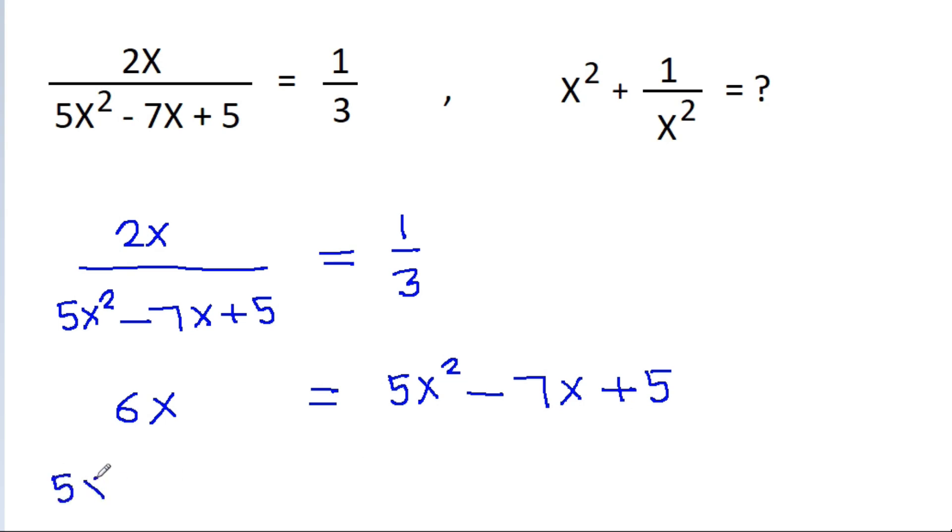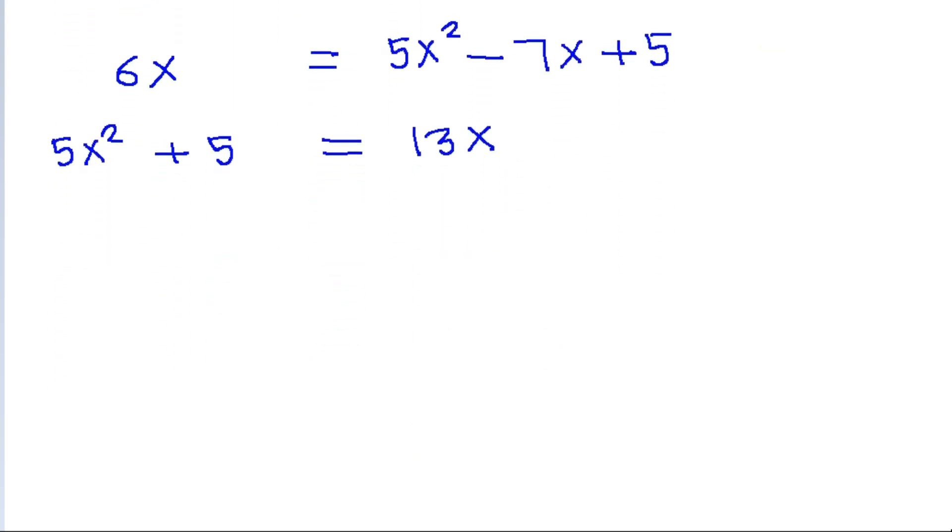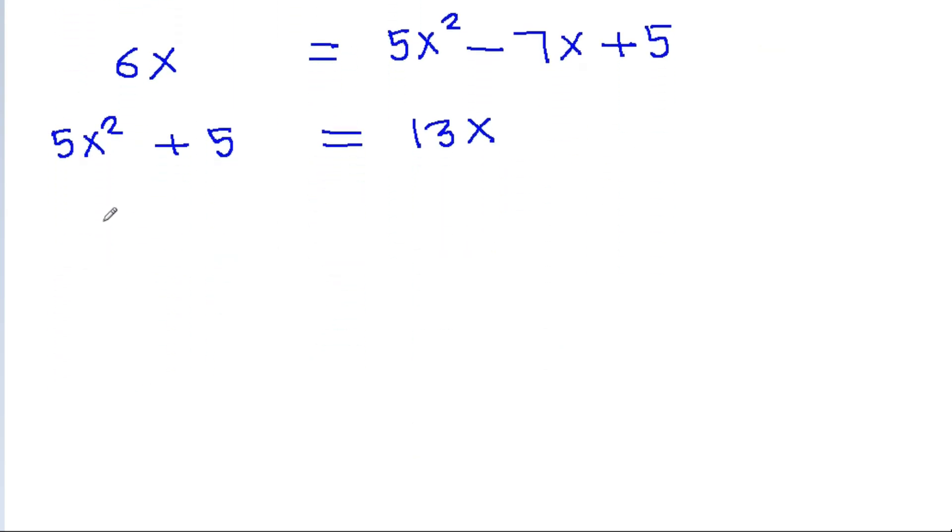Rearranging this equation, we get 5x² + 5 = 6x + 7x = 13x. Now if we divide both sides by x, we get 5x + 5/x = 13.